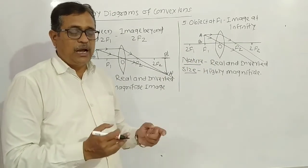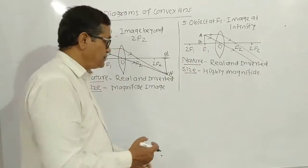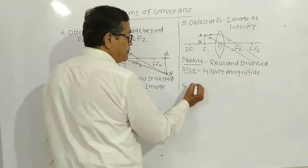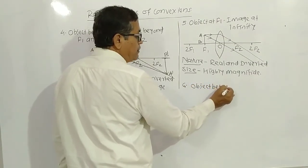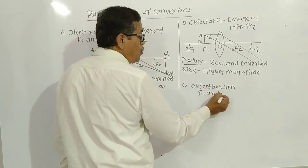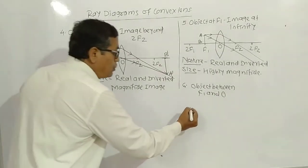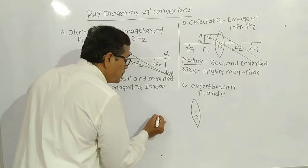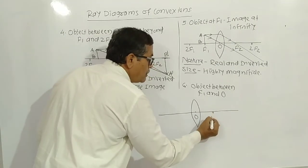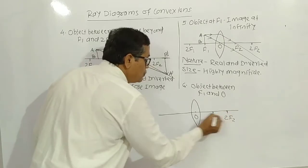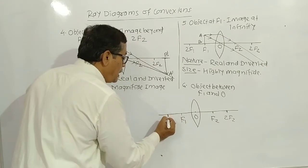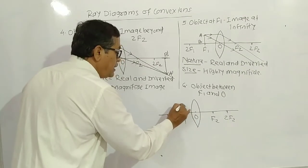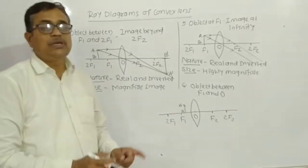In the last diagram, when the object is between F1 and the optical center, the image is virtual and erect, on the same side as the object. This is diagram number six — object between F1 and O. Here is the Convex Lens with optical center O, principal axis, F2, 2F2, F1, and 2F1. AB is the object. We also use the first and third rules here.